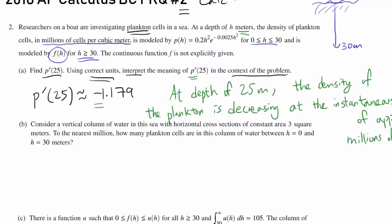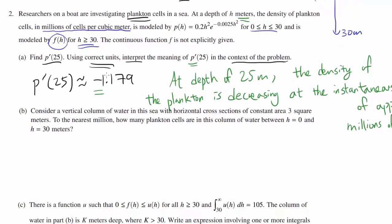Let's move on to part B. And by the way, if you guys find any mistakes in the explanation, please comment it below. Consider a vertical column of water in the sea with a horizontal cross-section of constant area 3 square meters. So it's always 3 square meters, and you're going down. To the nearest million, how many plankton cells are in this column of water between H=0 and H=30? You're starting at the surface, the ocean surface, and you're diving all the way down to 30.